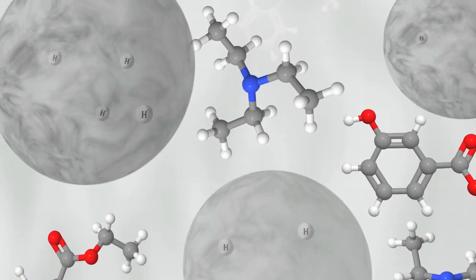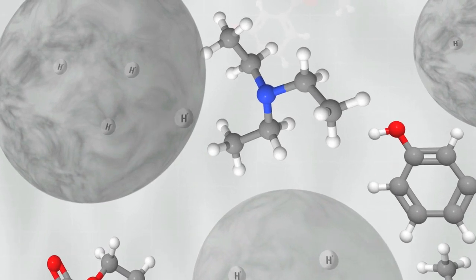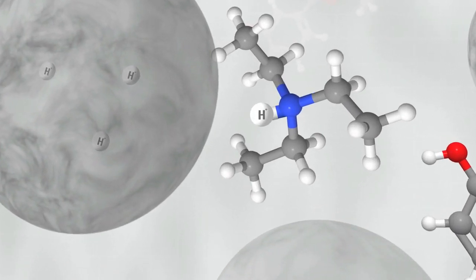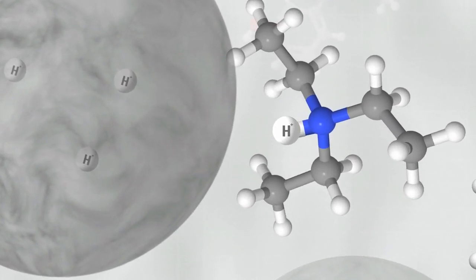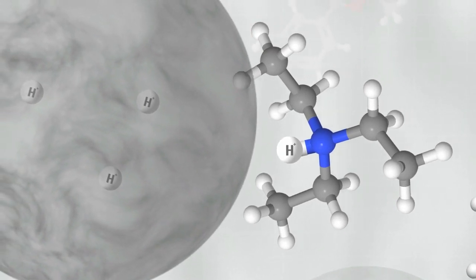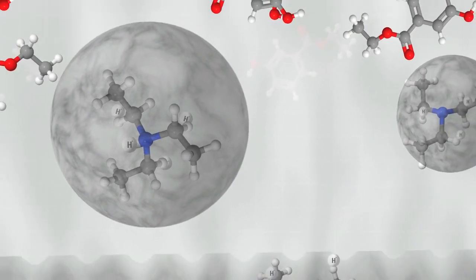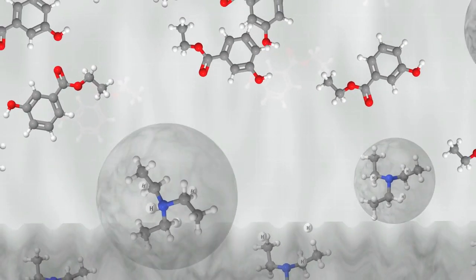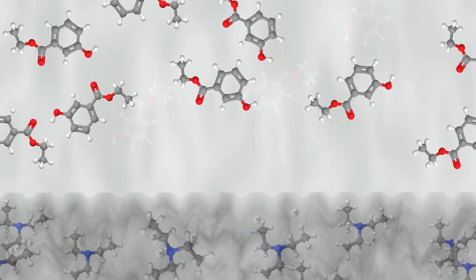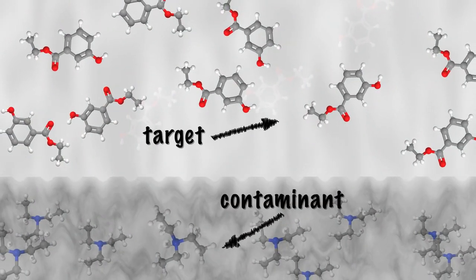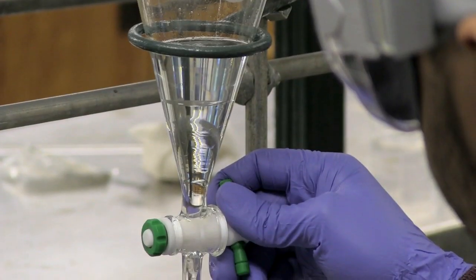As the students shake the mixture, the acid reacts with the contaminant to form a salt. This salt is much less soluble in ether than it is in acid, so it moves from the ether to the acid. The two liquids separate back into two layers. Overall, the target molecule stays in the ether and the contaminant moves to the acid layer.